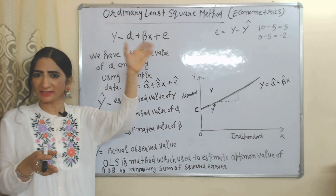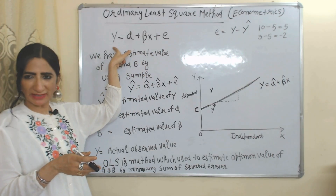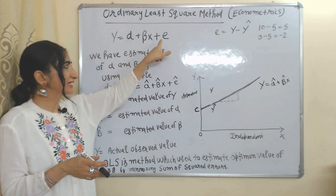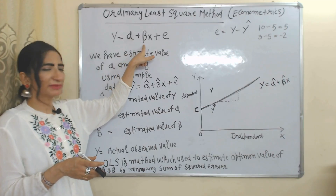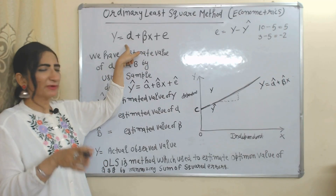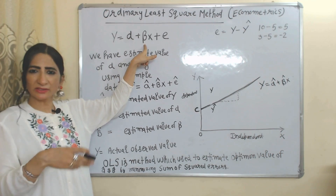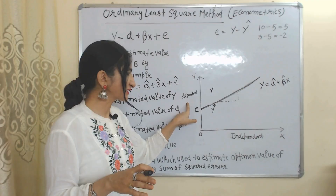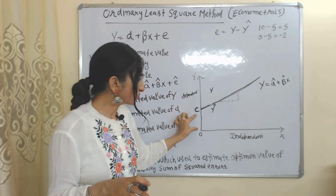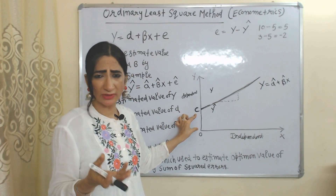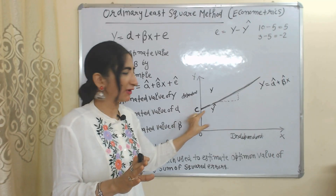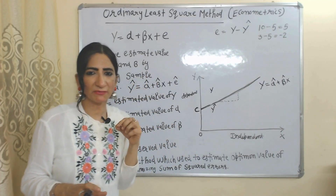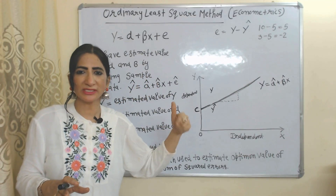This equation we have already studied in the simple linear regression model. Y is a dependent variable, X is the independent variable — that means Y depends on X. The error term is included, and alpha and beta are our parameters: alpha is the intercept and beta is the slope of the curve. On the X-axis we have the independent variable, on the Y-axis we have the dependent variable.